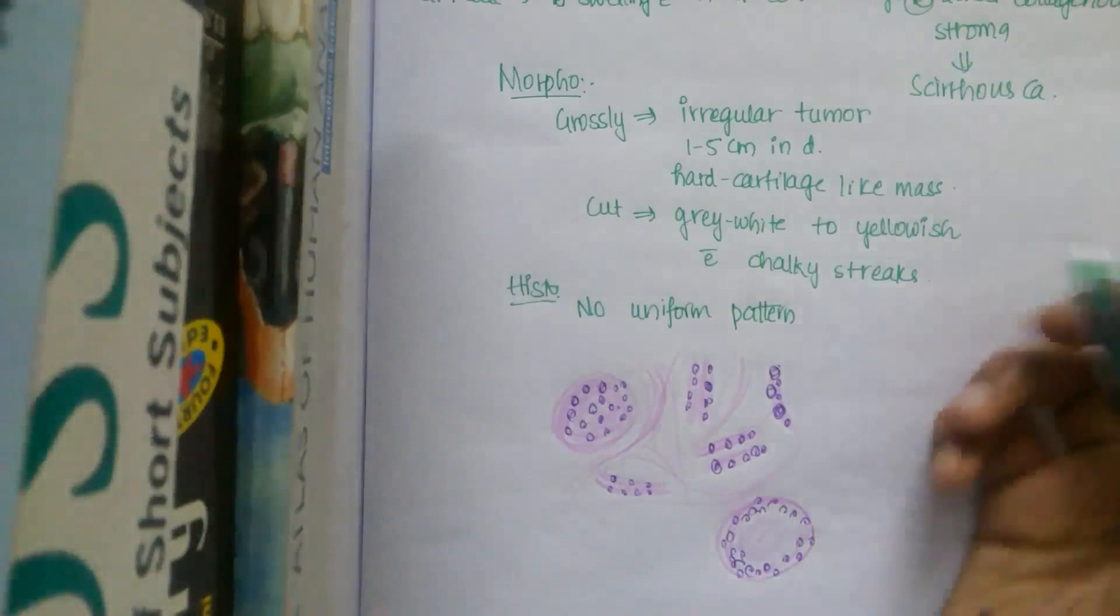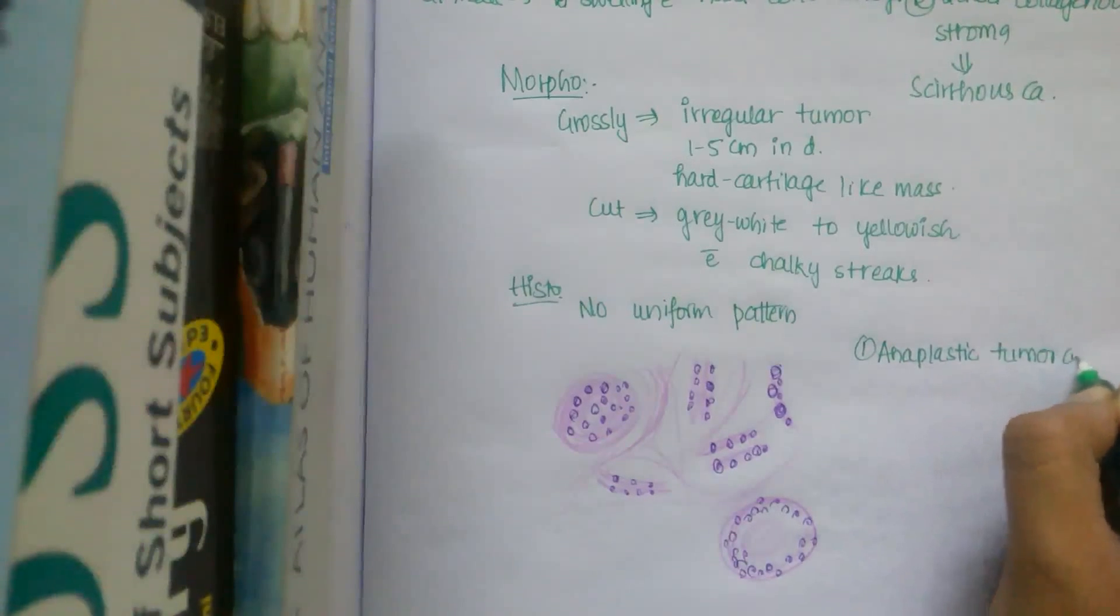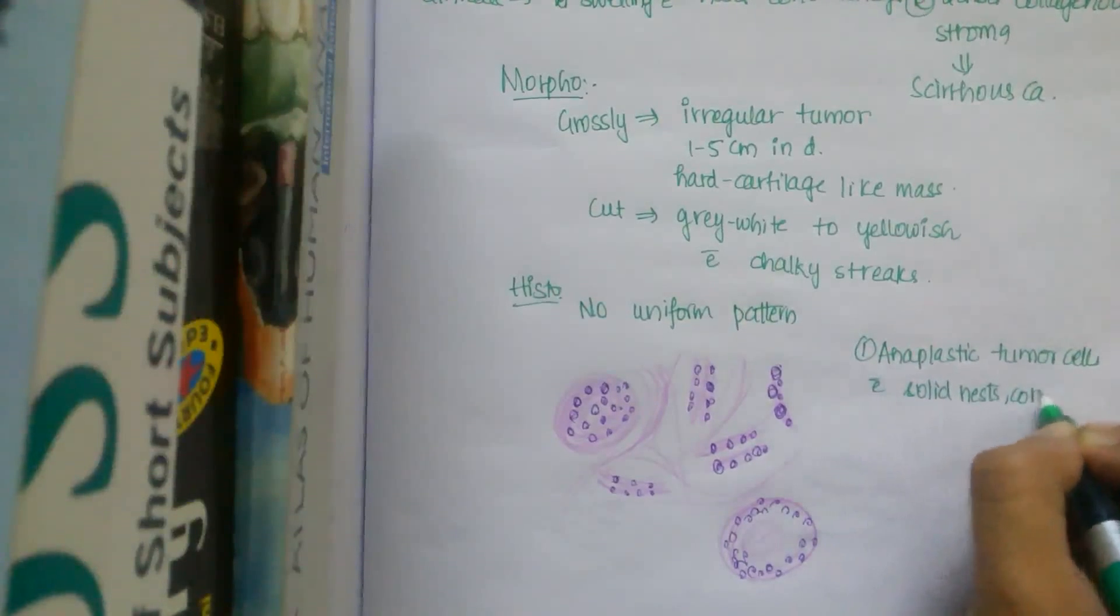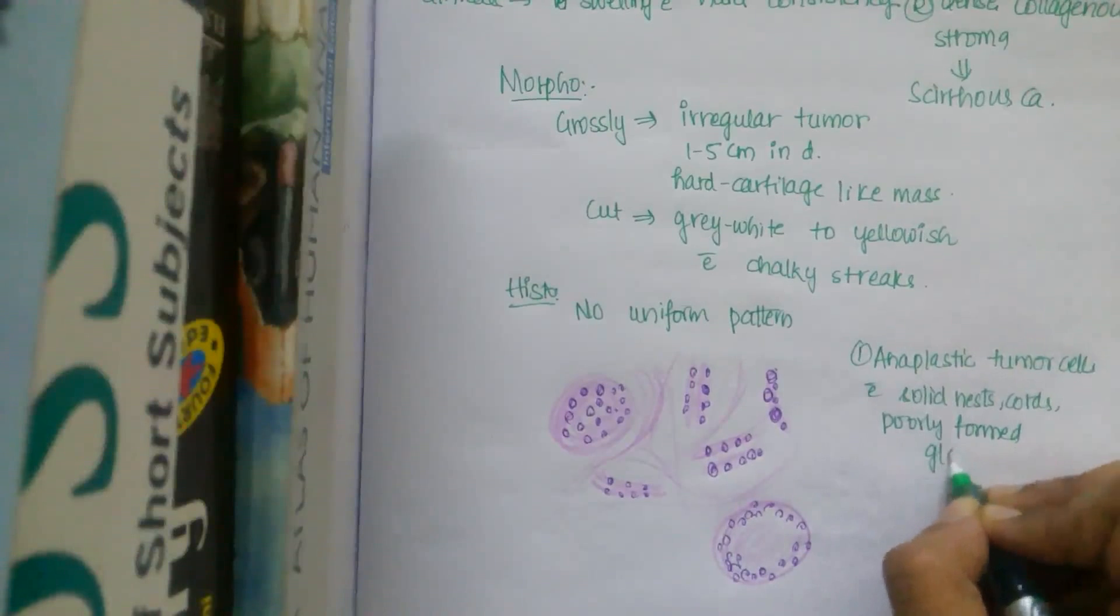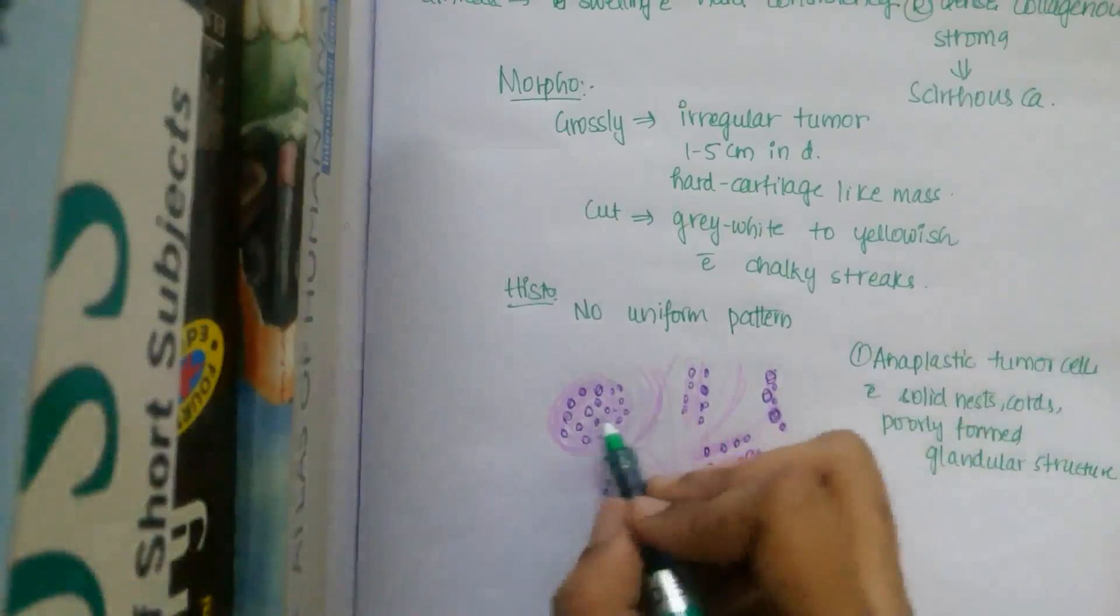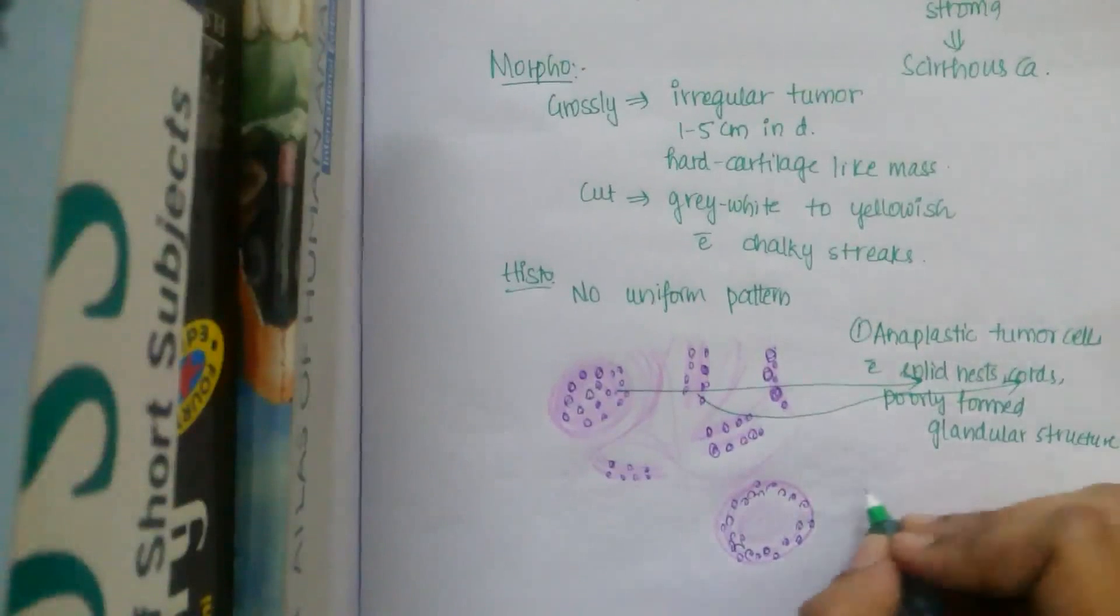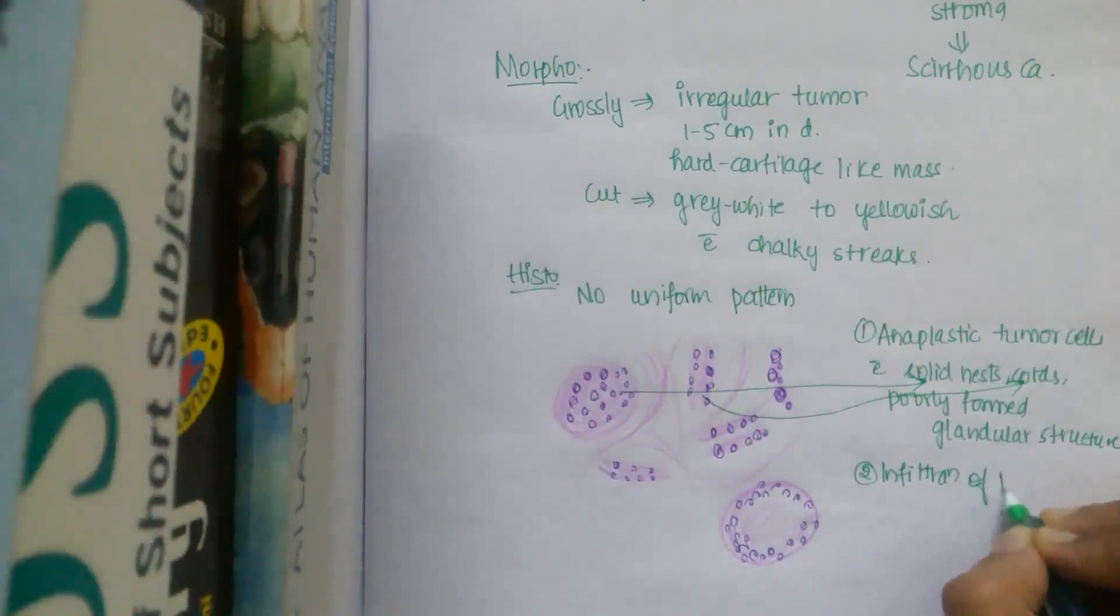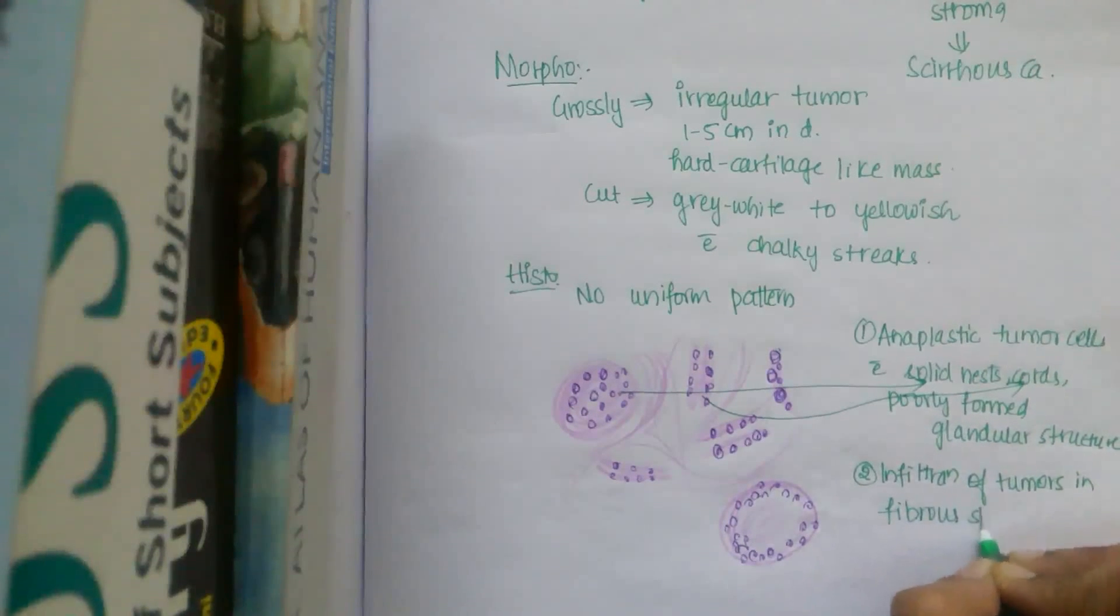As I said it shows three different features. One is it has anaplastic tumor cells. One is it has anaplastic tumor cells with solid nests, solid nests, cords and sometimes poorly formed glandular structures. All these are anaplastic tumor cells. All these are anaplastic tumor cells and these are nests and these are cords.